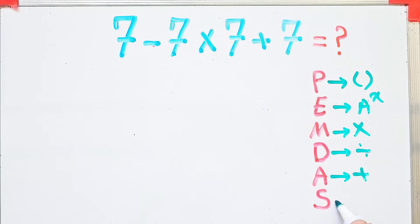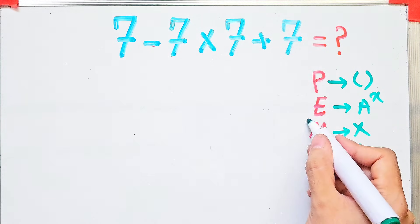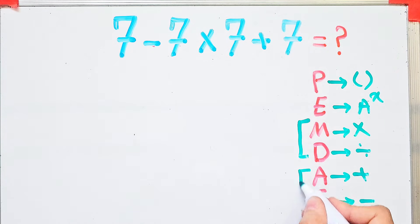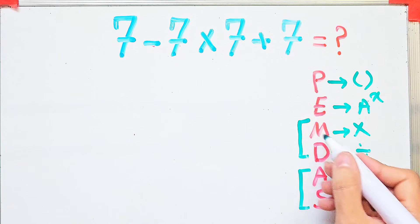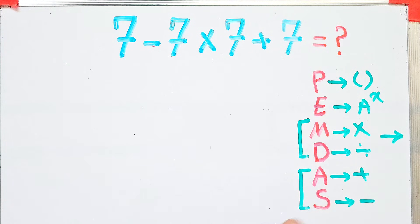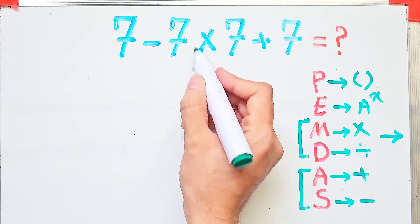Remember that the multiplication and division have the same level of priority. Also, addition and subtraction have the same priority. When we have both in an expression, we start from the left and simplify.